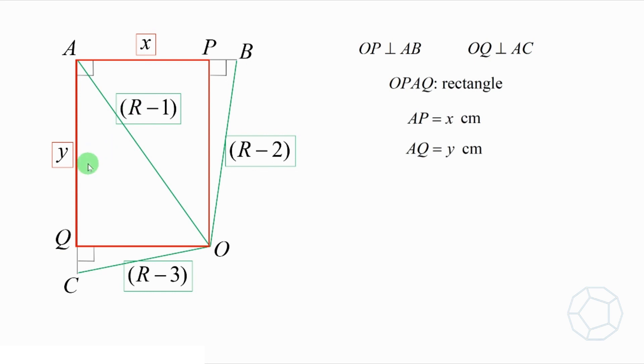Well, we have three unknowns X, Y, and R in total. How can we proceed? To solve for them, we need three equations. And as you can see, there are so many right angles in the figure. We can make use of Pythagoras theorem.